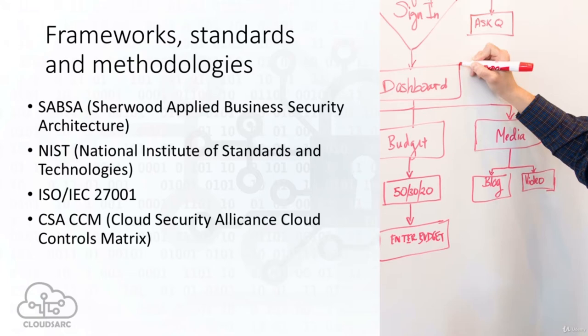NIST has a comprehensive security framework consisting of three components: core, implementation tiers and profiles. The NIST framework core provides a set of desired cybersecurity activities and outcomes using common language that is easy to understand. It guides organizations in managing and reducing cybersecurity risks in a way that complements existing security and risk management processes. The NIST framework implementation tiers assist organizations by providing context on how an organization views cybersecurity risk management and are often used as a communication tool to discuss risk appetite, mission priority and budget. NIST framework profiles are an organization's unique alignment of requirements, objectives, risk appetite and resources against the desired outcomes of the framework core, primarily used to identify and prioritize opportunities for improving cybersecurity.